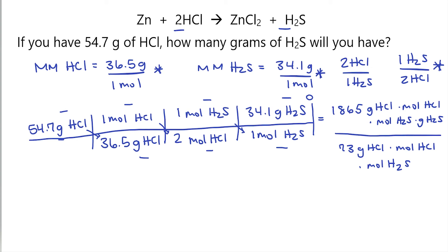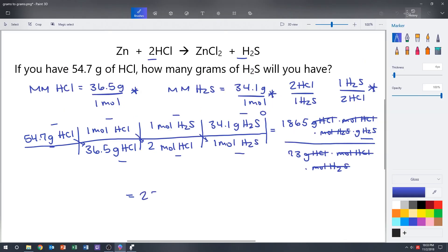Now looking at the top and bottom of this fraction, I can see that I have grams of HCl here, grams of HCl here. I have mole of HCl here, I have mole of HCl here, I have mole of H2S here, and mole of H2S here. All that's left is gram of H2S, which is exactly what the question wanted me to find. Next, I'll take my 1,865 and I'll divide by 73, and that is going to be equal to 25.5 grams of H2S.